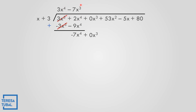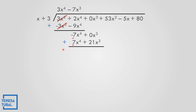Multiply: negative 7x cubed times x is negative 7x to the fourth, and negative 7x cubed times 3 is negative 21x cubed. Subtract — distribute the negative: positive 7x to the fourth and positive 21x cubed. 7 minus 7 cancels, and 0 plus 21 is 21x cubed. Bring down 53x squared. Divide: 21x cubed divided by x is positive 21x squared.